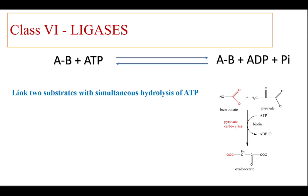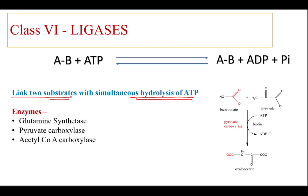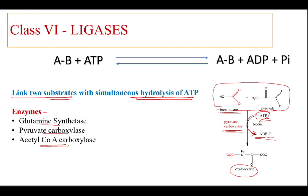Class 6: ligases. This group of enzymes is mainly involved in linking two substrates with simultaneous hydrolysis of ATP, so energy utilization occurs in this reaction. Examples are glutamine synthase, pyruvate carboxylase, and acetyl-CoA carboxylase. In this example, pyruvate carboxylase catalyzes the conversion where bicarbonate combines with pyruvate to form oxaloacetate, and in this process ATP is hydrolyzed to ADP and inorganic phosphate. So ligases link two substrates along with hydrolysis of ATP.